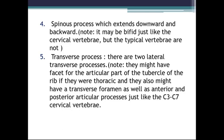We also have the spinous process, which extends downward and backward from the junction of the two laminae. When we see the spinous process in 3D, we will understand its exact position. The spinous process may be bifid in some vertebrae, such as the cervical vertebrae, but not in the typical thoracic vertebra.